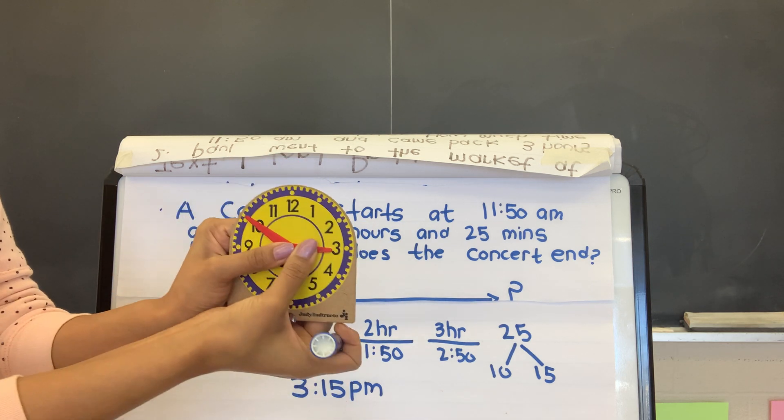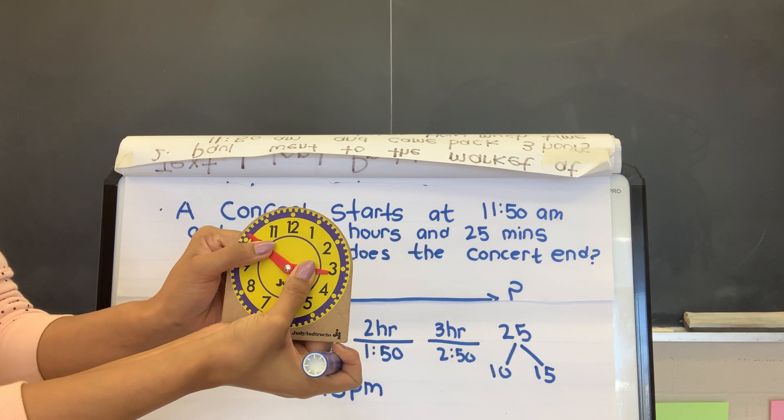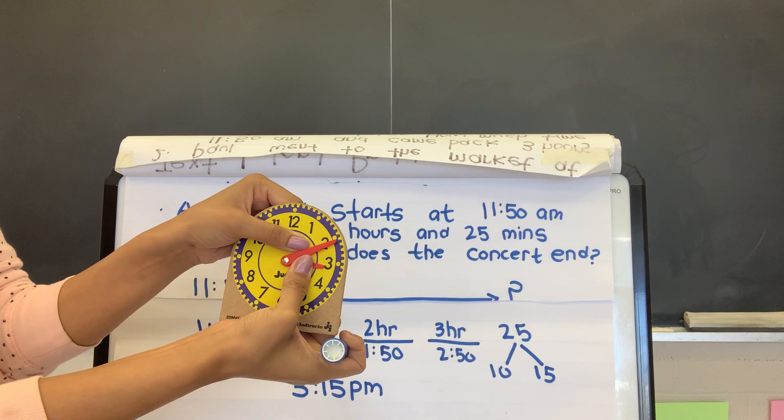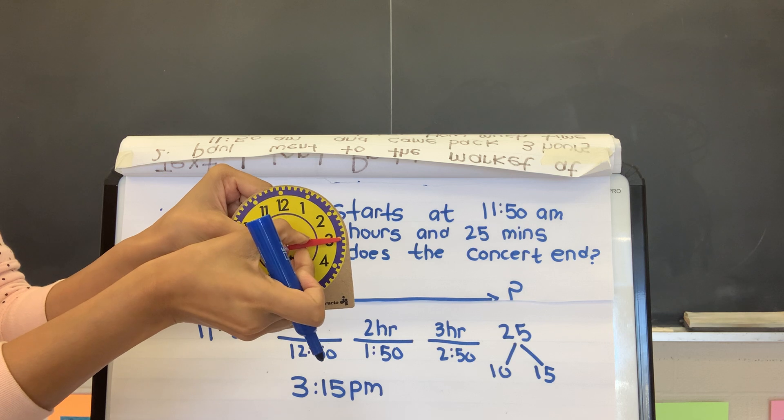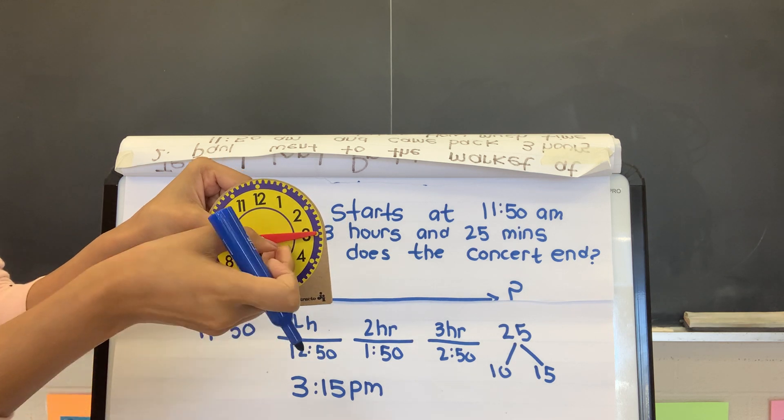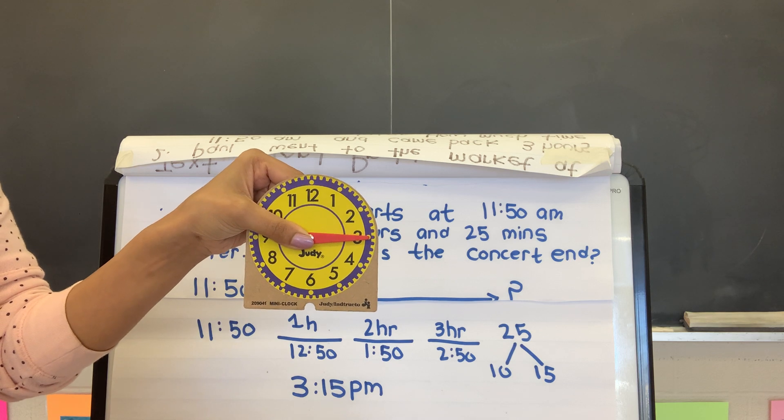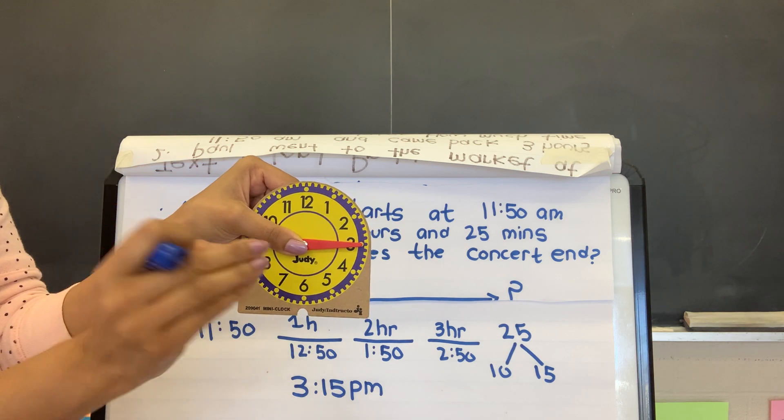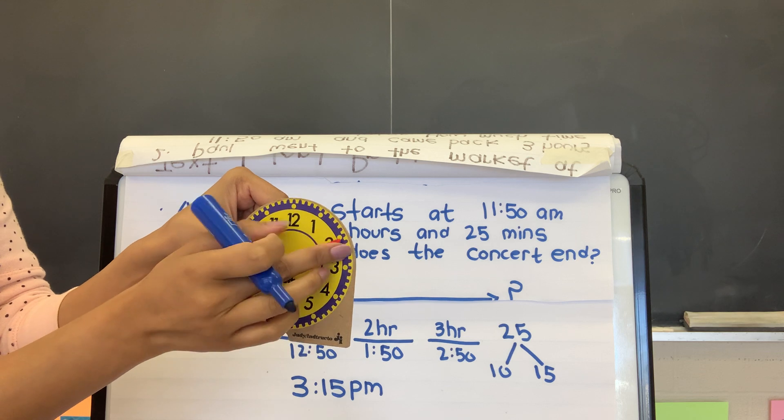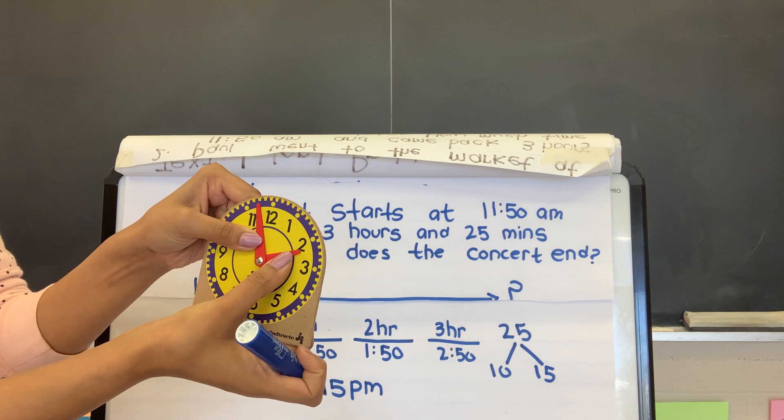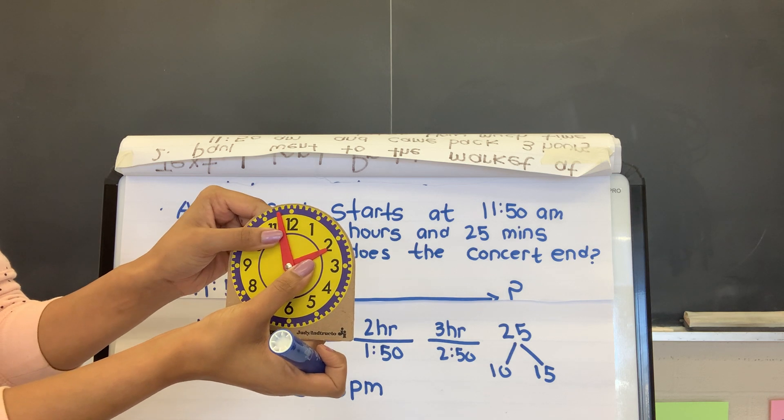So I know that 25, so 5, 10, 15, 20, and 25. So imagine, so that means that it ended at 3:15, but imagine if we don't remember to change our hour, then watch this, this is what's going to happen. If we don't remember to change our hour, then we're going to say, oh, the concert ended at 2:15.